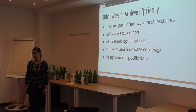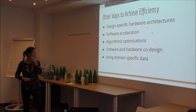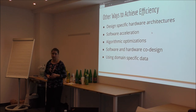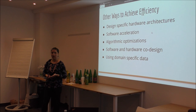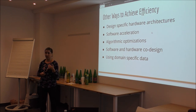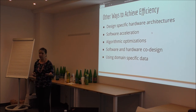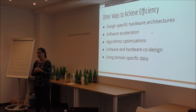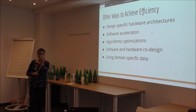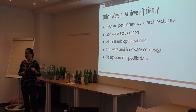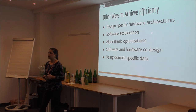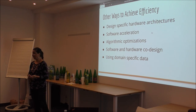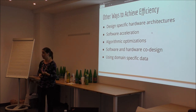There are also other ways to achieve efficiency. These include hardware acceleration, software acceleration, and algorithmic optimizations such as pruning — where small weights are set to zero — quantization, which decreases the precision of weights, and network distillation. There are also ways to combine software and hardware approaches. Another way is using domain-specific data: if the data is very accurate and representative of the phenomenon, this allows for an efficient detection solution trained on it.